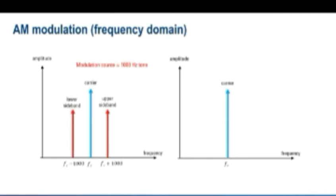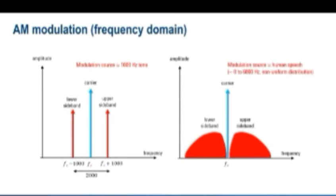Human speech, on the other hand, contains very broad and non-uniform spectral content. So if we use human speech as a modulation source, it will also be broad and non-uniform. The total width of an AM modulated signal will be twice the width of the highest modulating frequency.